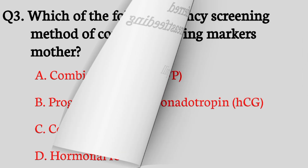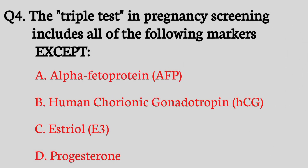Question number four. The triple test in pregnancy screening includes all of the following markers except — the right answer is option D: Progesterone.